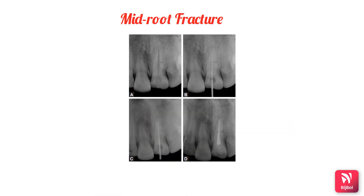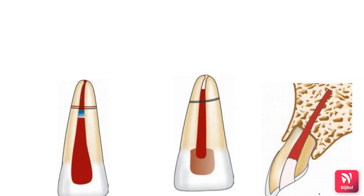In the illustrated case of root canal treatment of both apical and coronal portions in a root fracture of tooth 2-1, picture A shows the pre-operative radiograph, followed by the working length, master cone, and post-obturation radiographs. That is the management of mid-root fractures.